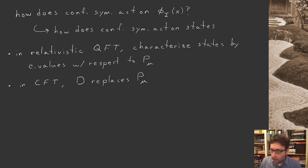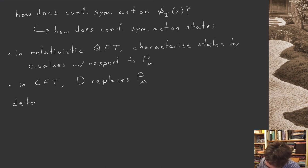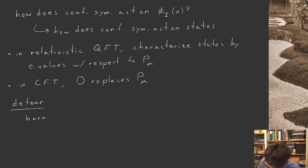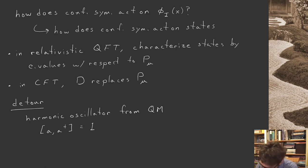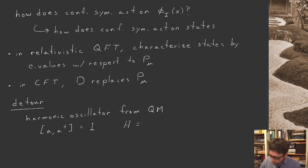I want to take a slight detour to build on stuff I think you're familiar with. I want to first discuss the harmonic oscillator and then get right back to conformal symmetry and representations of the conformal symmetry algebra. So the harmonic oscillator from quantum mechanics: if you had a good quantum mechanics course you discussed raising and lowering operators, usually called a and a-dagger. They fail to commute — when you commute them you get the number one. There's also a Hamiltonian. I'll set omega equal to one and write the Hamiltonian simply as a-dagger a plus some shift, where e-naught is the ground state energy.